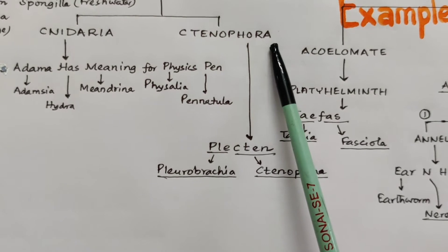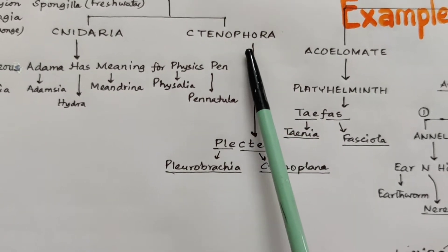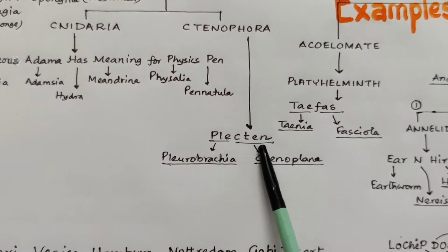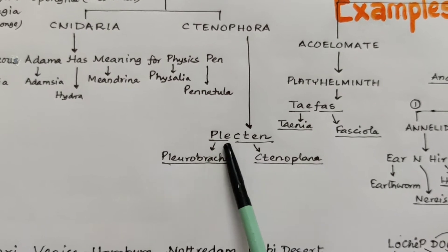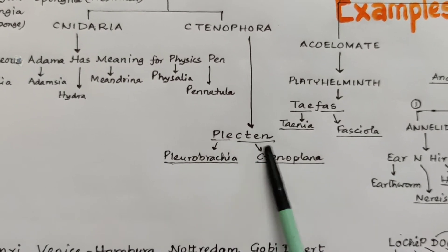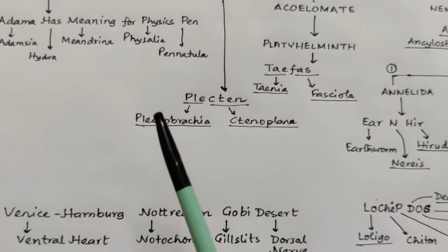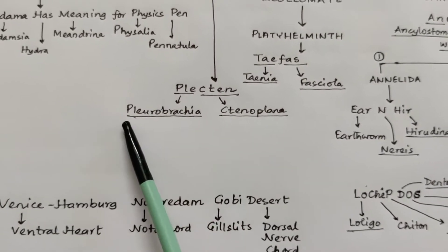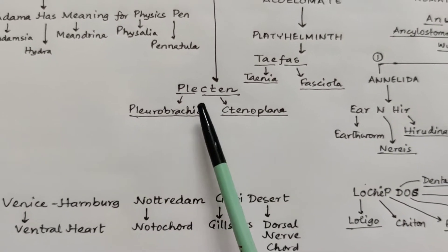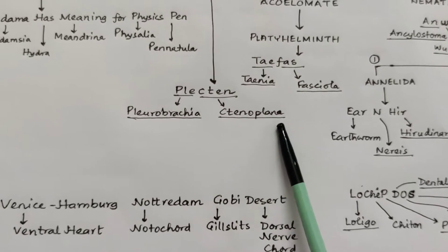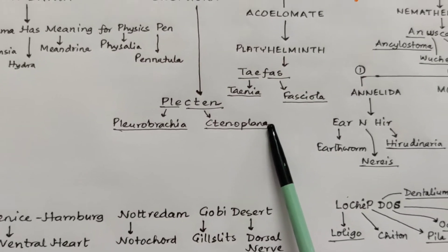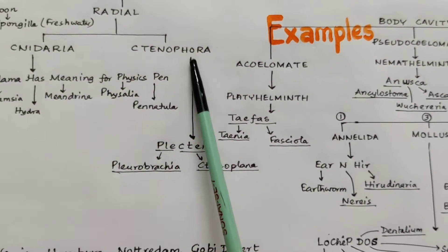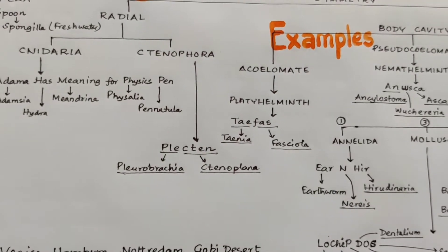The next one is Ctenophora. In Ctenophora, we have to remember only 'Plactin.' We have to know two names — Pleurobrachia and Ctenoplana. So these are the two phyla having radial symmetry.